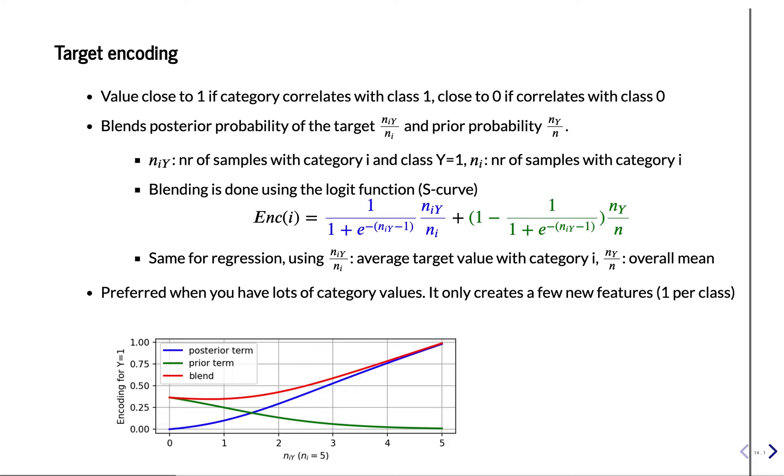And the idea is that if we have a category, and that category occurs together with a positive class, so if every row in the data that has a category, and that row also has the positive label, then we assign a value close to one. If on the other hand, it correlates with the negative class, then we assign a value close to zero.